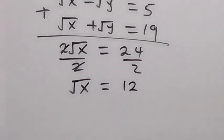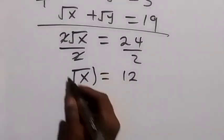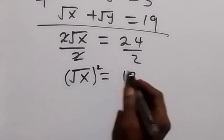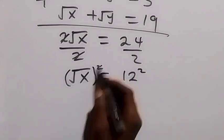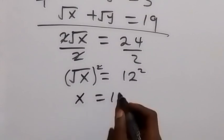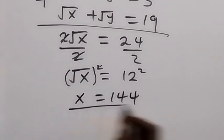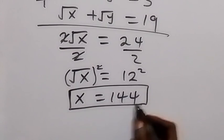And since we are finding x here, we can square both sides. We square this side and we square this side. Square cancels the square root, so we have x equals to 144. Here, we have the value of x.